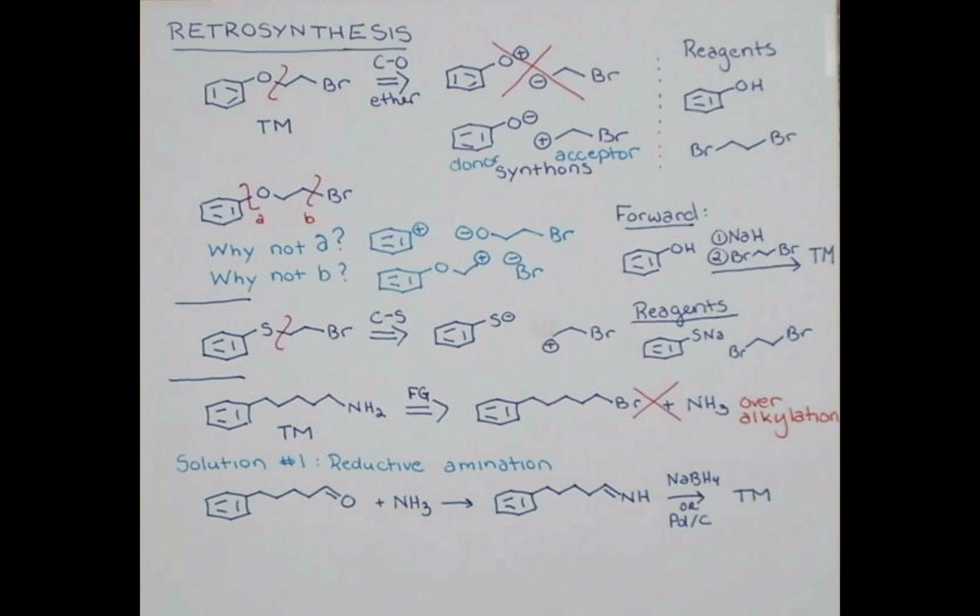The second solution to the overalkylation problem is to make the amide and then reduce that. Amides are formed very smoothly by the reaction of an amine with an acid chloride. And this can be treated with lithium aluminum hydride to form our target molecule. Now this acid chloride is actually not commercially available. But I looked it up and the acid is. So just with the OH here, we know that we can treat carboxylic acids with thionyl chloride and form the acid chloride smoothly. So we have a route to this.